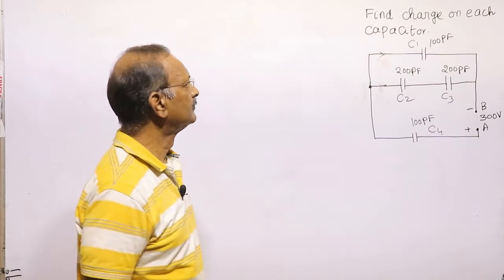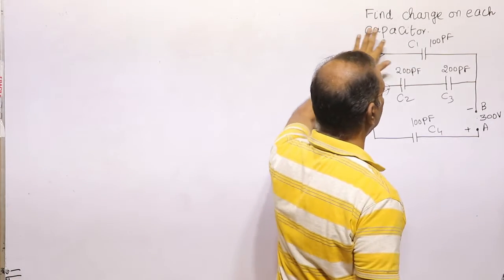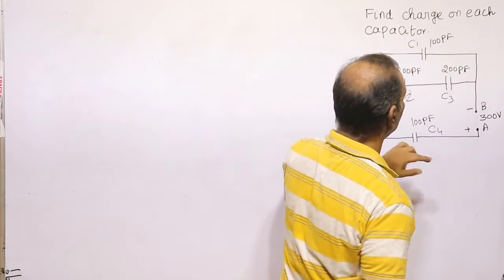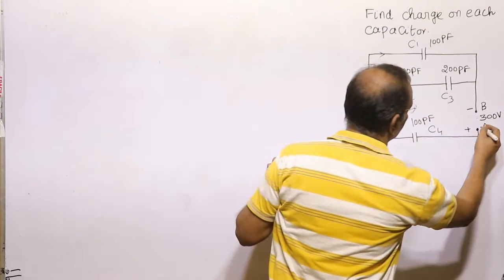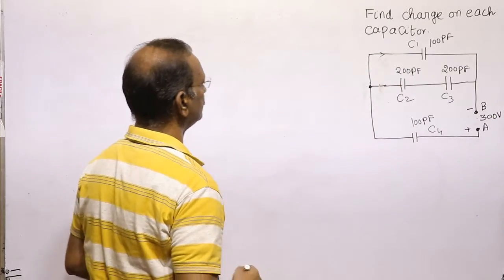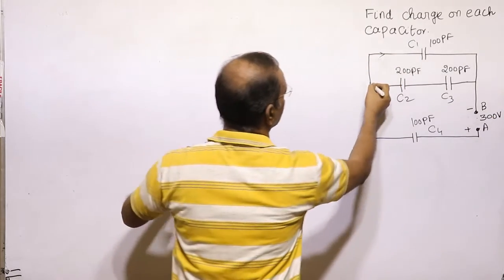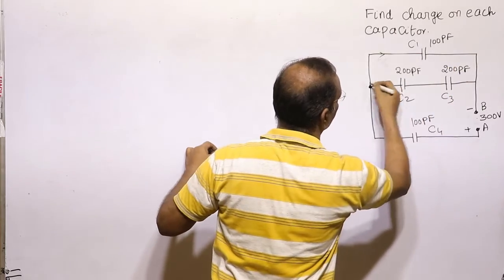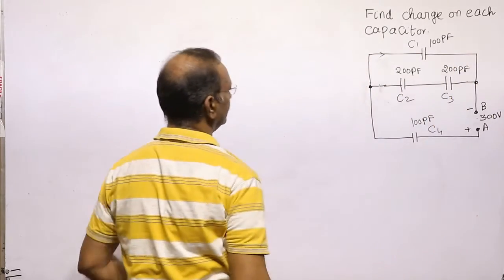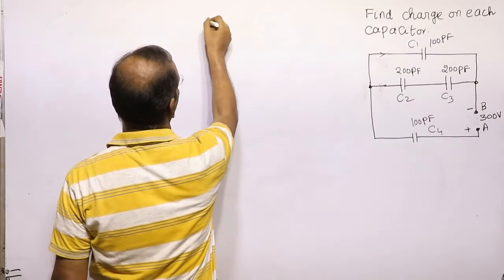Welcome students. Find the charge on each capacitor. There are four capacitors connected across a 300 volt source. We'll redraw the circuit. C1 is on one side, and from this point C2 and C3 are connected — it means C2 and C3 are in parallel.